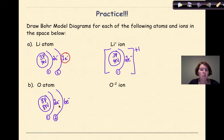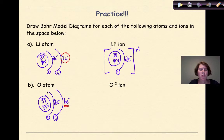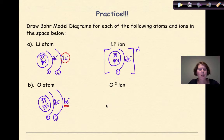Looking at the oxygen atom, there are 6 valence electrons in that outer shell. Oxygen is a non-metal, and non-metals like to gain electrons. This oxygen atom can gain 2 electrons to get a full outer shell.